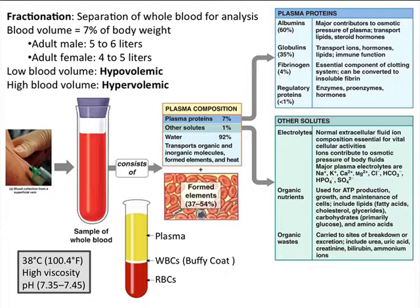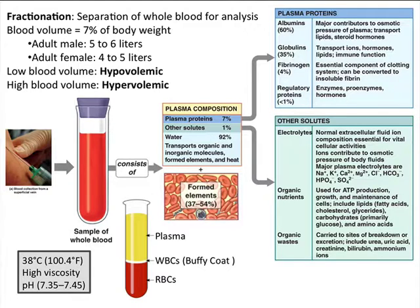Then there are the other solutes in three categories. First, electrolytes: sodium, potassium, calcium — all the metal ions and cations. Second, organic nutrients such as glucose, various lipids, and amino acids — these are used for ATP production in cells. And finally, waste products — usually nitrogen-containing compounds that will be excreted in the urine.